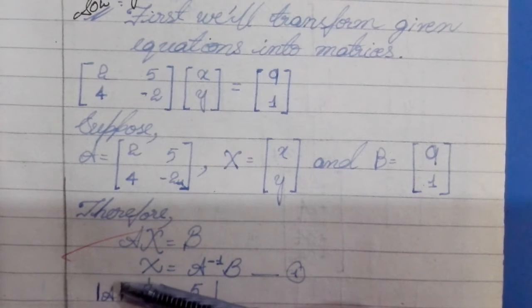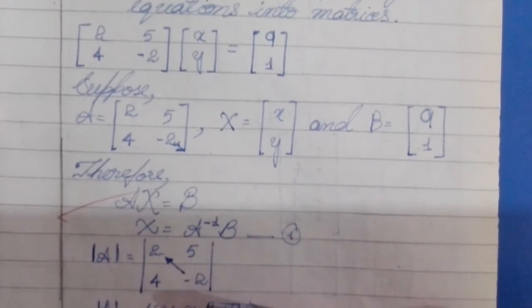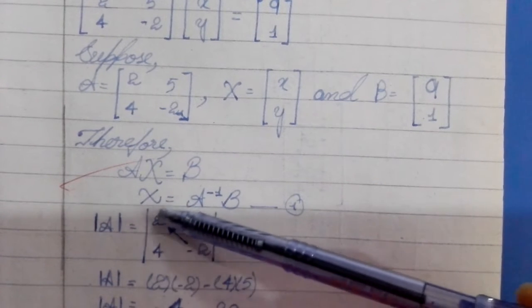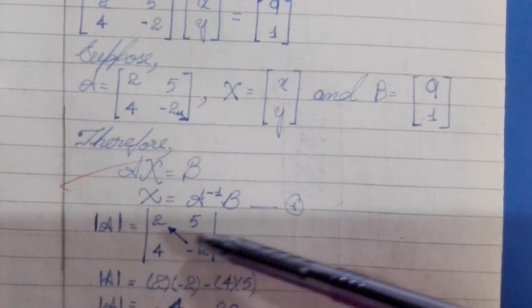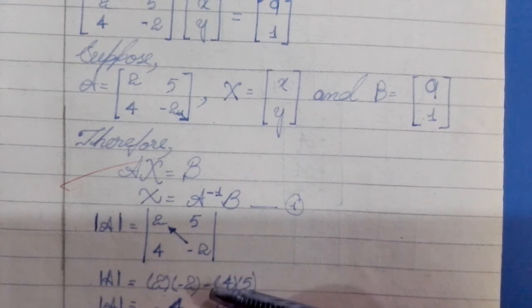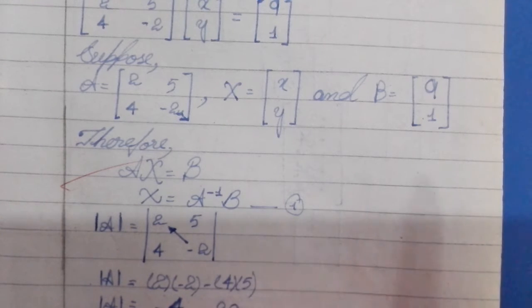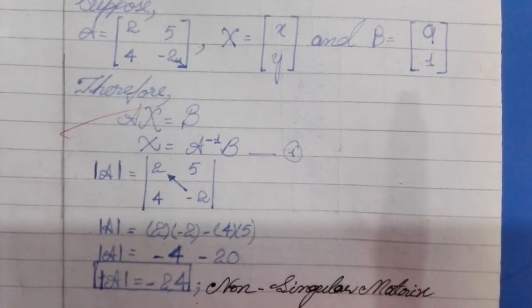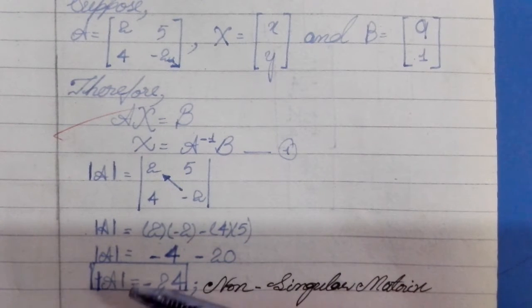Now, we will find the determinant of A. We multiply the opposite diagonals and subtract. For the determinant of A, if the value is non-zero, it is not equal to zero.